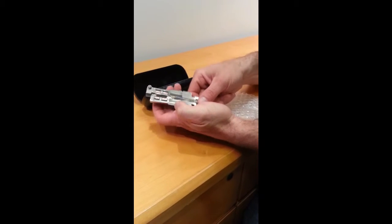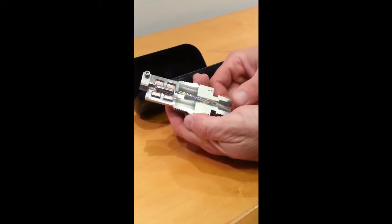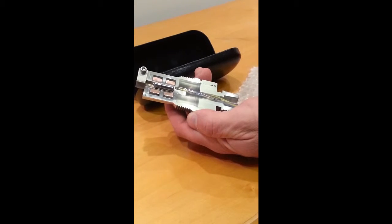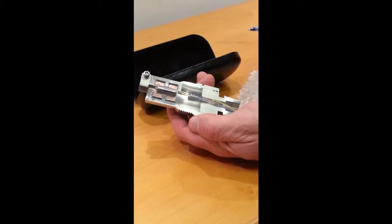So what we have here is a cutaway of our 301 sensor. Our 301 sensor is an inline viscometer that measures viscosity, temperature, and temperature compensated viscosity.